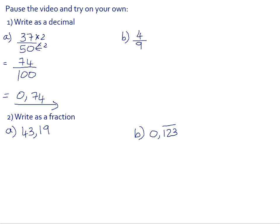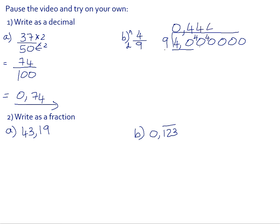4 over 9: 9 is not a factor of any power of 10, so we have to do the division. This is 4 divided by 9 — numerator inside the divide, denominator outside. It will be 4.0000. 4 divided by 9 is 0. 40 divided by 9: 9 fours are 36, so 9 goes into 40 four times with a remainder of 4. 40 divided by 9 again is the same — 4 remainder 4. This carries on, so 4 over 9 equals 0.4 recurring.